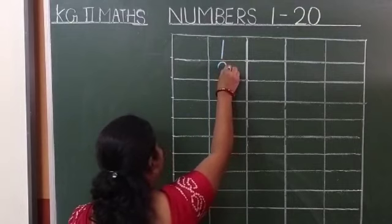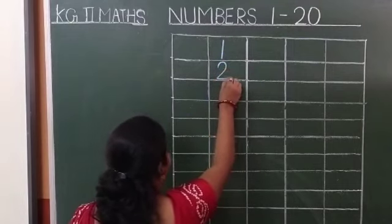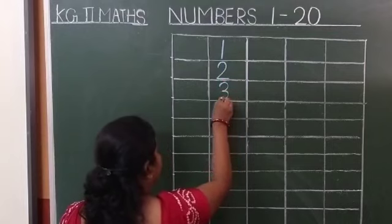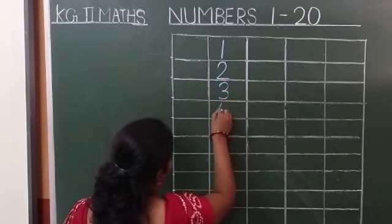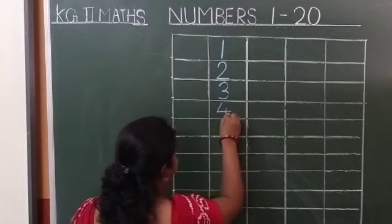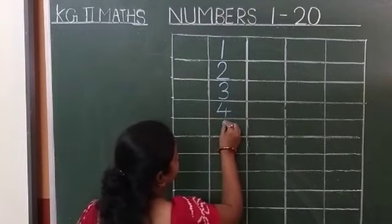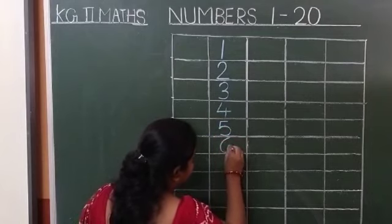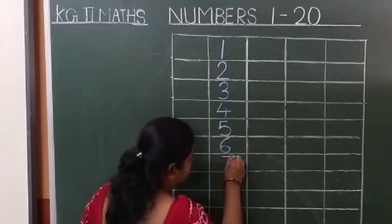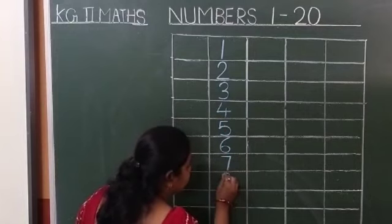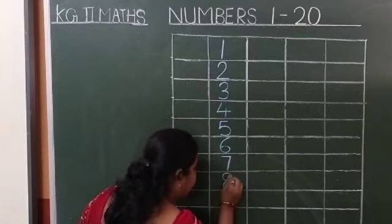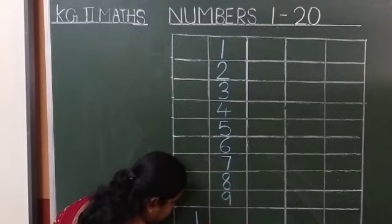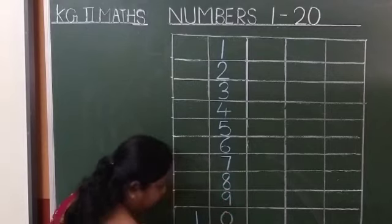1, 2 — like this. 3, 4 — like this. 5, 6, 7, 8, 9, 10 — like this.